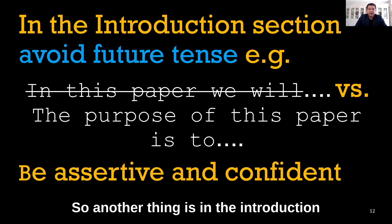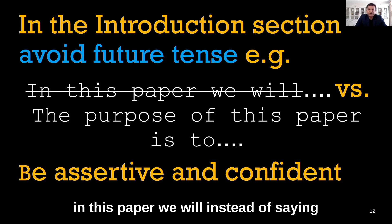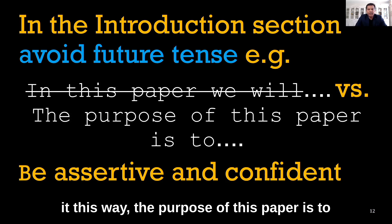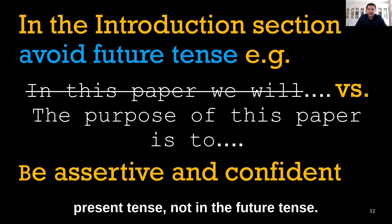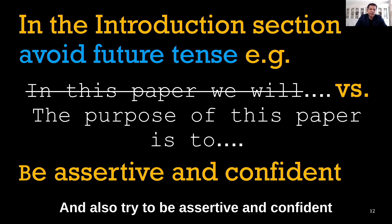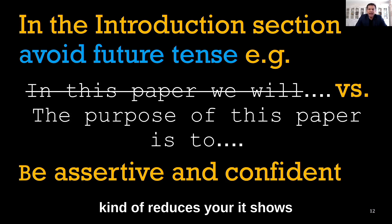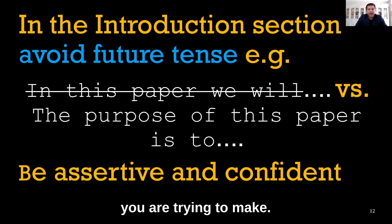Another thing: in the introduction section, avoid the use of future tense. Instead of saying 'in this paper, we will,' it is better to say 'the purpose of this paper is to' — keeping it in present tense, not future tense. Also try to be assertive and confident in your writing, and avoid words such as 'may' because they reduce the level of confidence. If you are confident about something, say it confidently and do not use words that weaken or soften the argument you are trying to make.